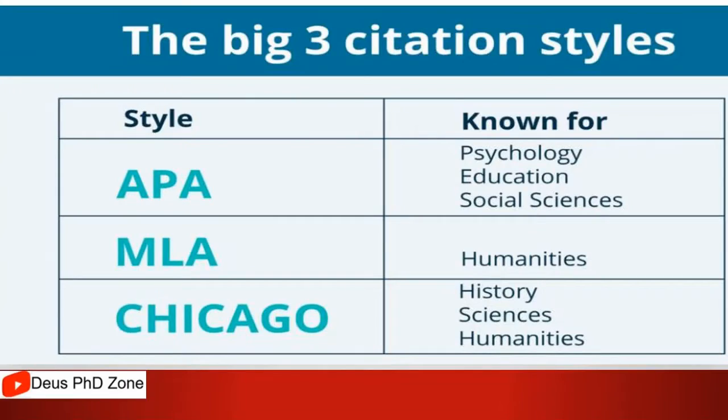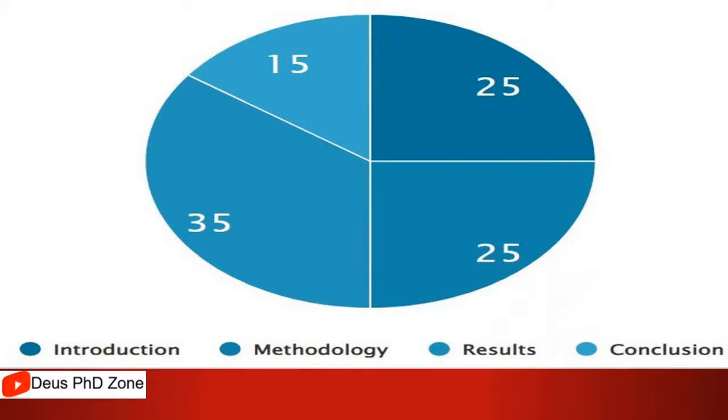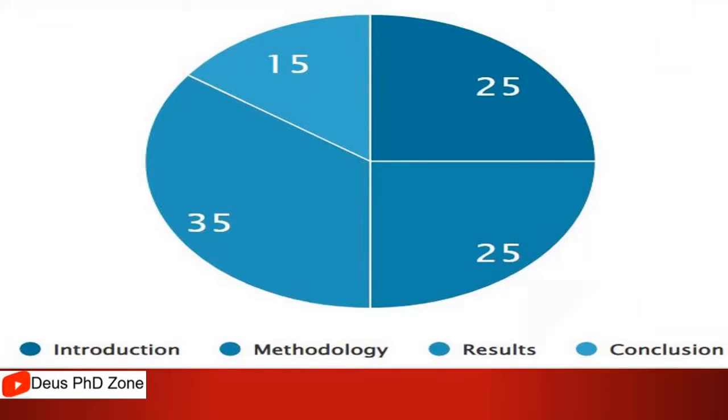Now, what to include in an abstract: the introduction should be 15% of your abstract, 25% should be your methodology, 25% your results, and 35% is your conclusion.